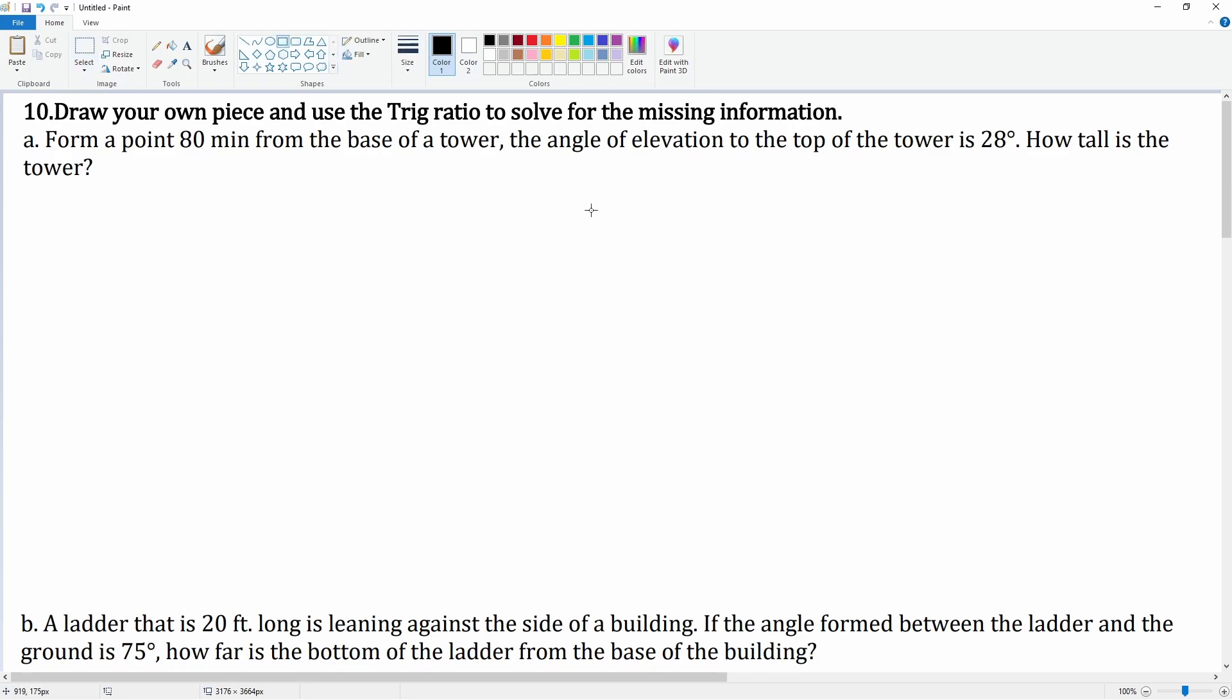Okay, so this is the tower. Let's just draw this right here. This can be the tower. Let me just label here, this is the tower. And we know that if this is from a point from the base, so right here, this is from the base, and they say that this is 80 miles. And there is an angle of elevation to the top which is going to be 28 degrees.